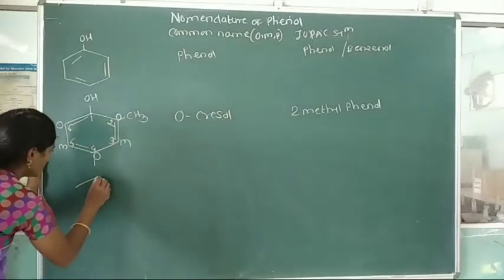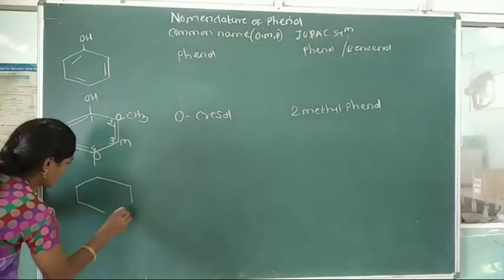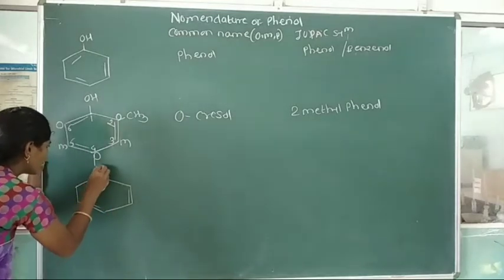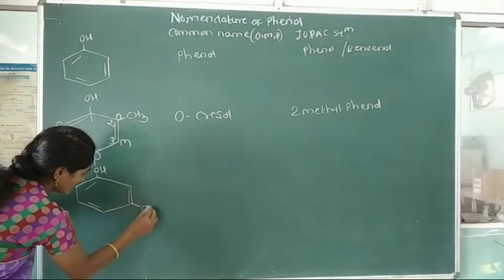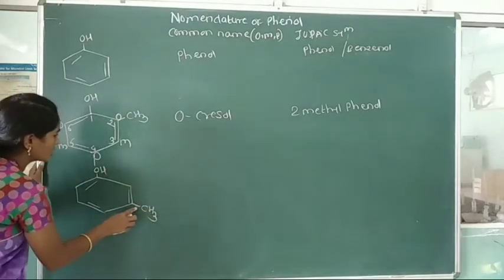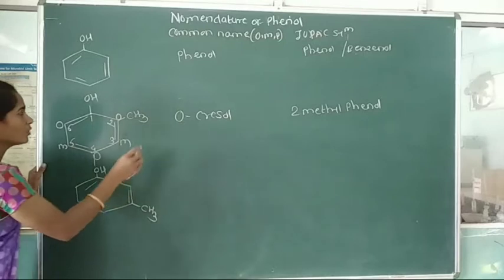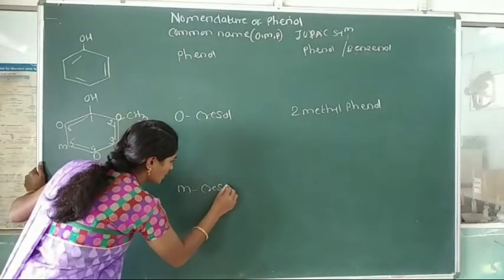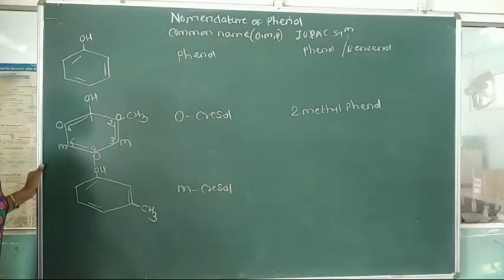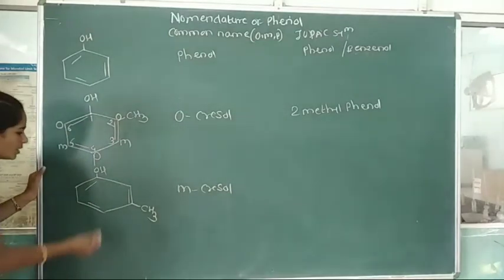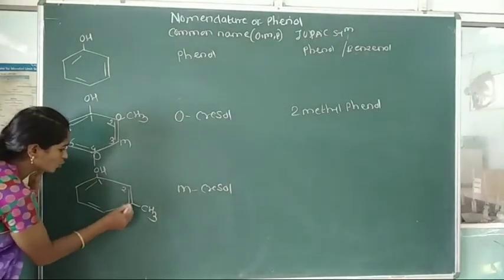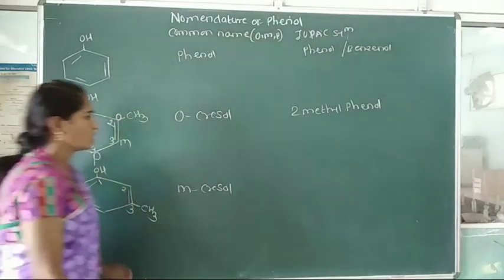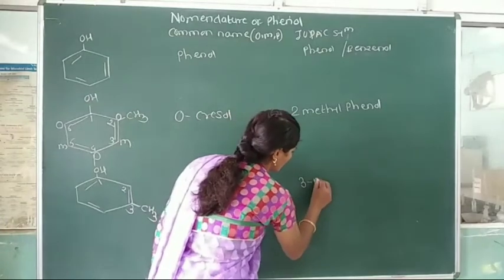In another example, suppose the methyl group is attached to the meta position relative to the hydroxy group. Then the common name is meta-cresol. In the IUPAC system, numbering gives carbon 1, 2, 3 — the methyl group is attached to the third carbon atom, so the IUPAC name is 3-methylphenol.